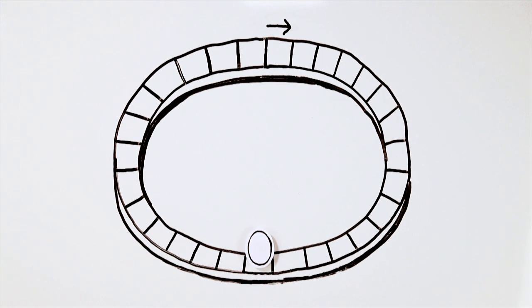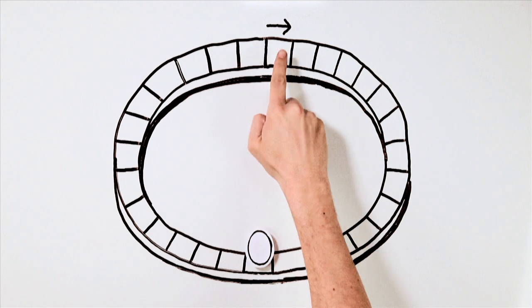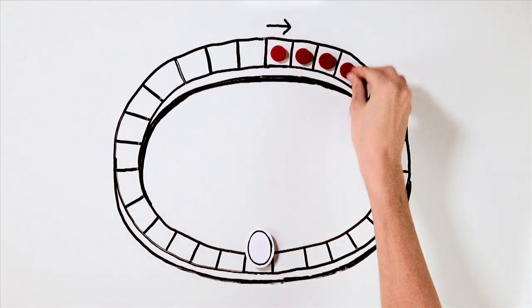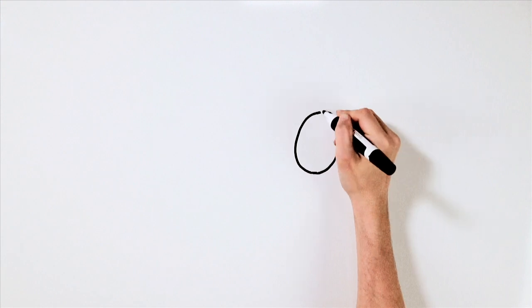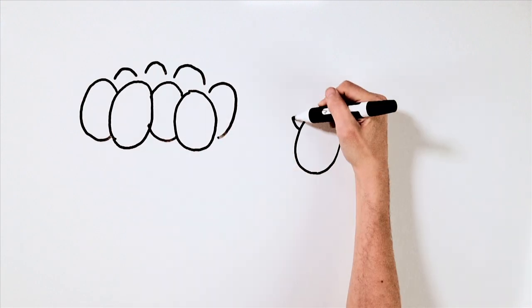Ovulation takes place around the middle of the menstrual cycle, and if you want to understand how a pregnancy starts, this is what you need to keep track of. 12 to 16 days after ovulation is when the menstrual bleeding starts. Most people have a regular menstrual cycle. The same number of days separate each period.